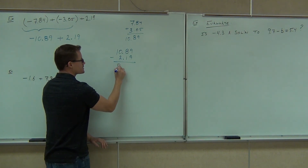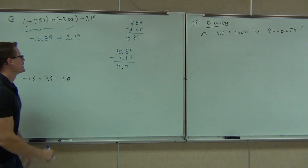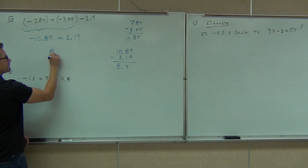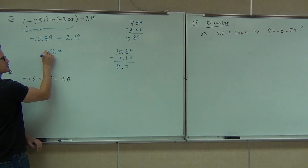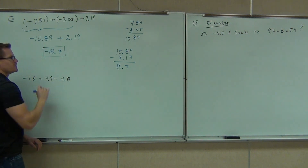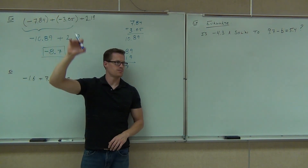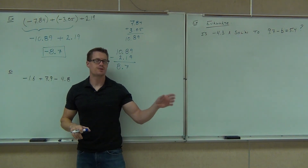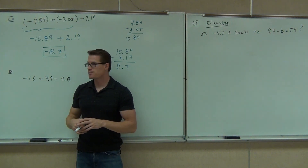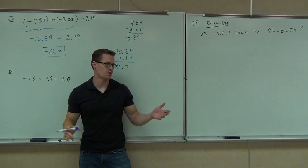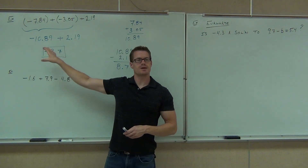We'll get 8.70 — or 8.7. Show of hands — how many people got negative 8.70? You can put the zero but you don't have to. Remember, at the end of that number the zero doesn't do much — 8.7 dollars or 8.70 dollars, same thing. Check out an example like this again; you're going to have something like that on your test.